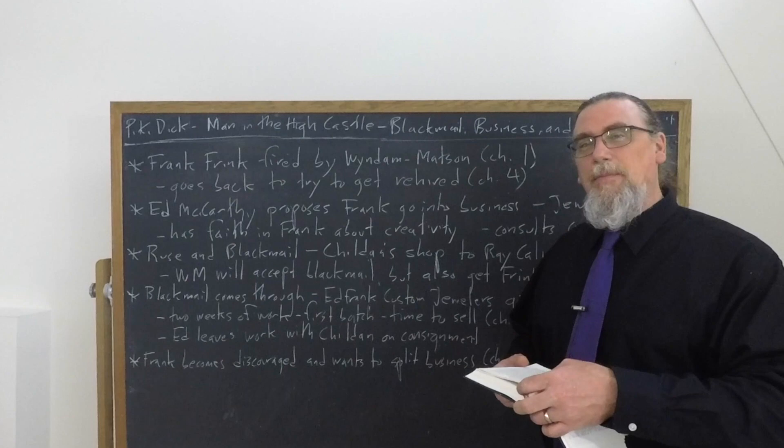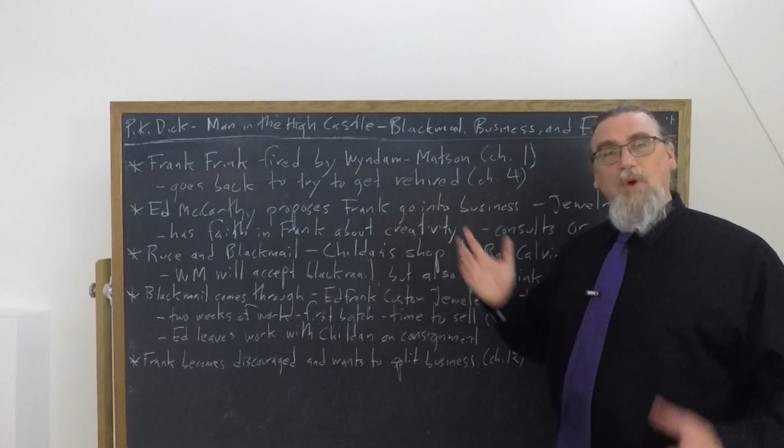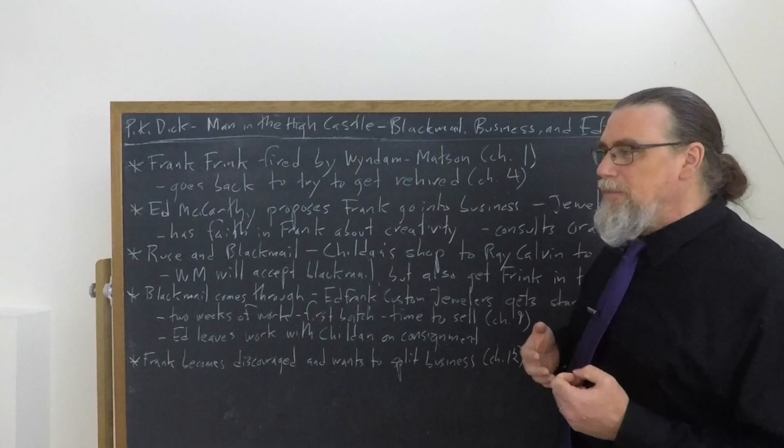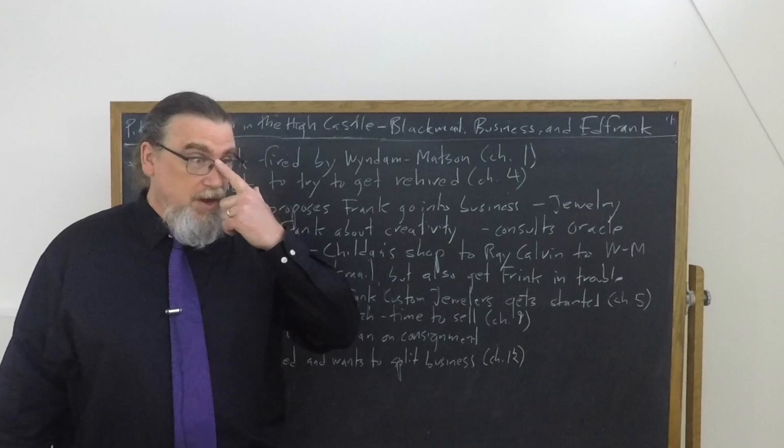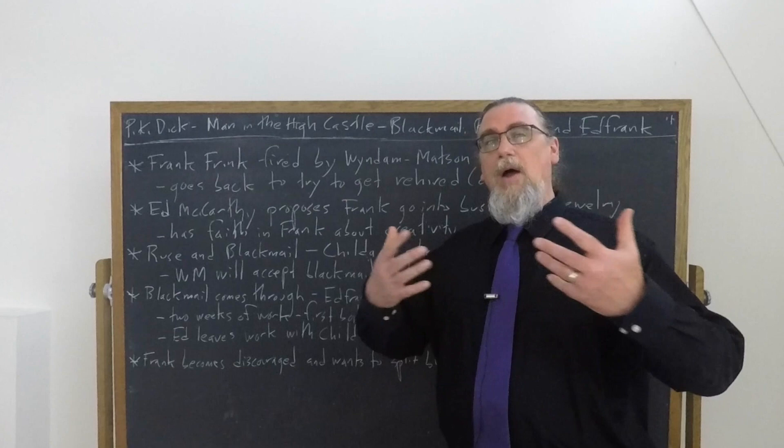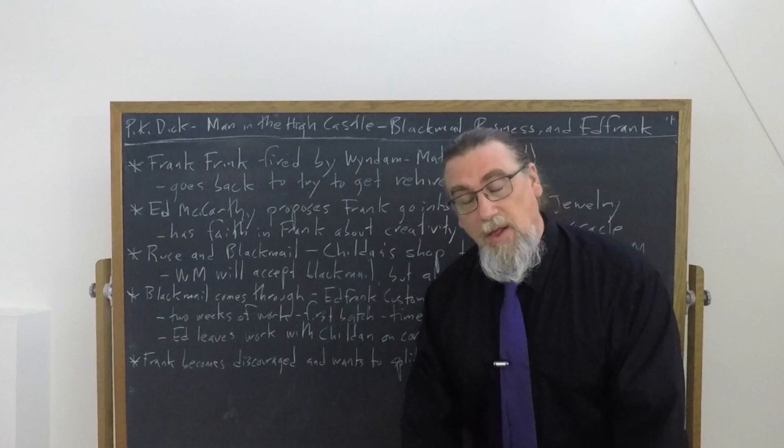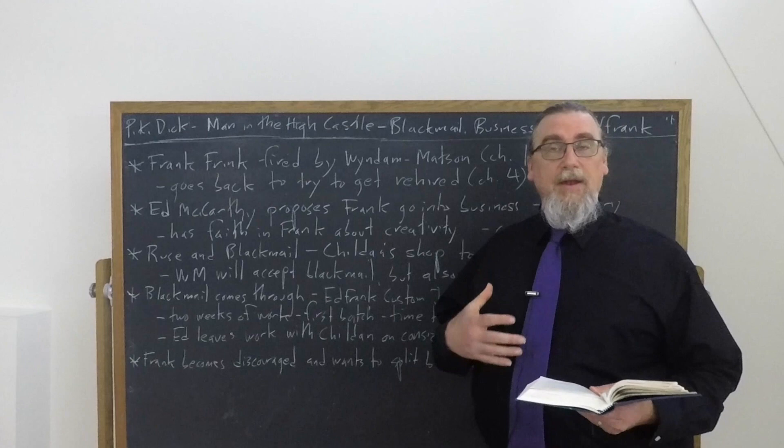There was no way that Robert Childen could lose. He didn't have to pay for this man's jewelry. He had no investment in this. If any of it sold, he made a profit. And if not, he simply returned it all. And so Ed leaves the card and goes back to the car. But what we're going to find is that this jewelry, particularly that which is made by Frank, Ed rightly had faith in Frank's creative abilities. Because as we discuss elsewhere, Frank's jewelry conveys this value recognized by some of the other characters of Wu, something primordial, something new, something that arouses affects and desires.